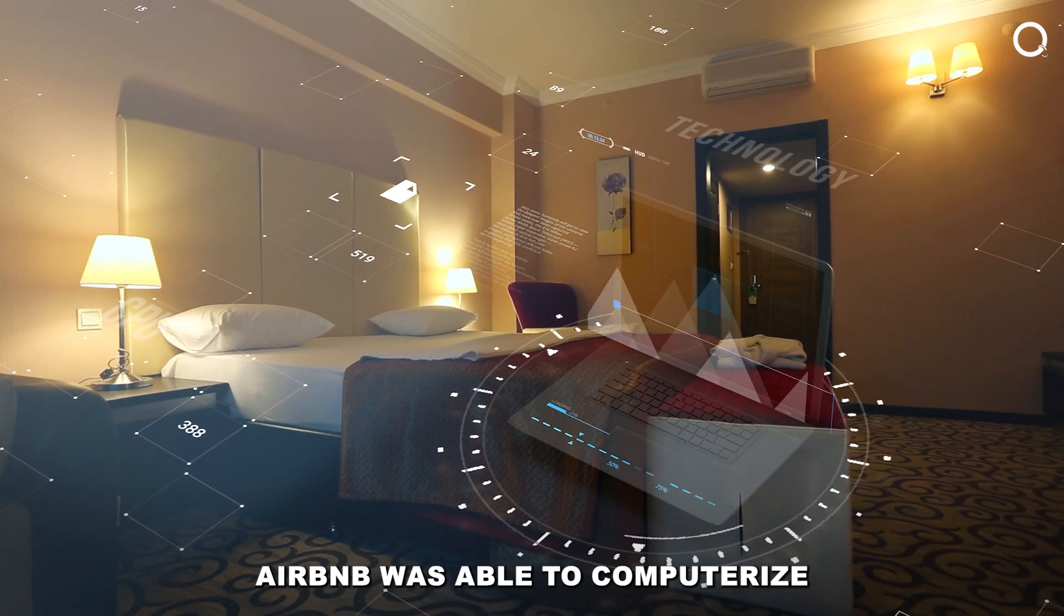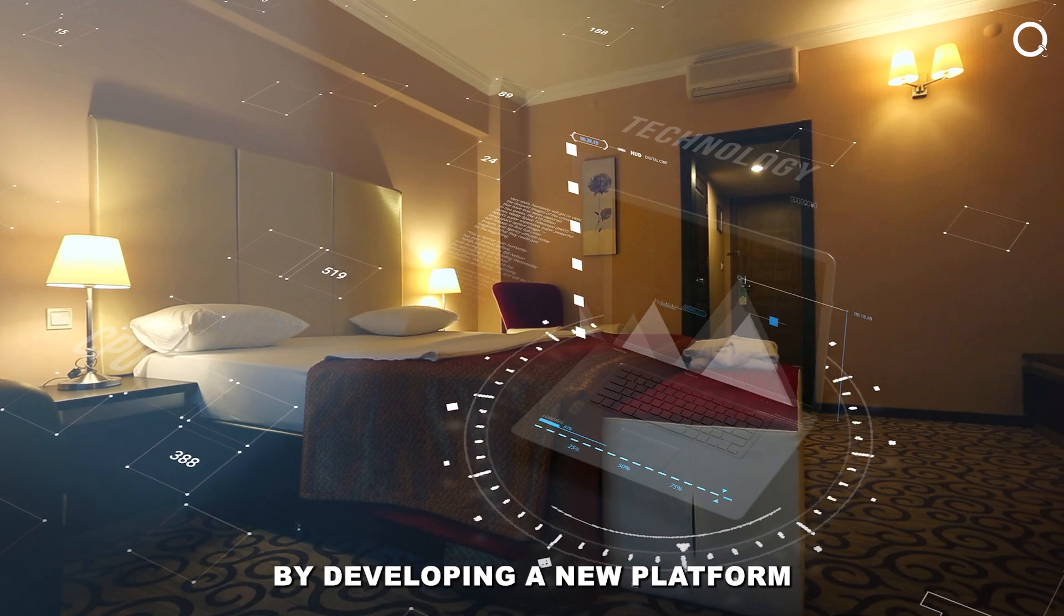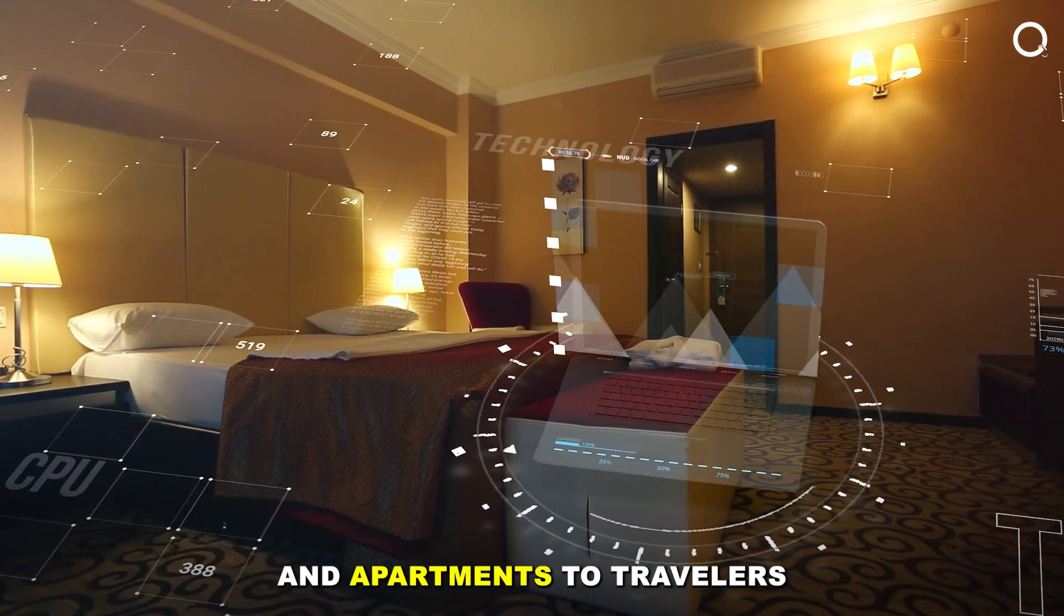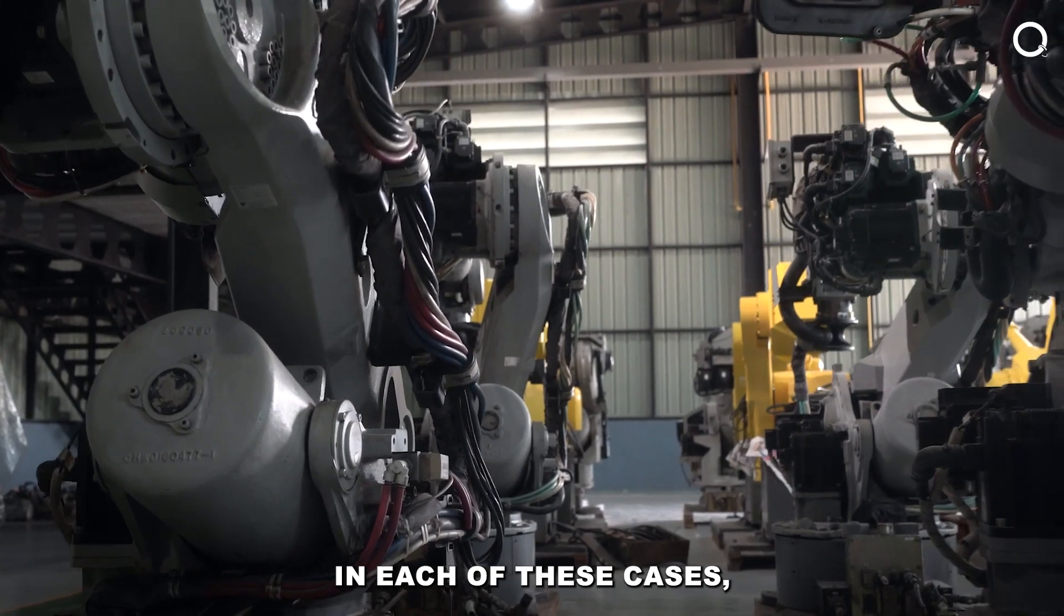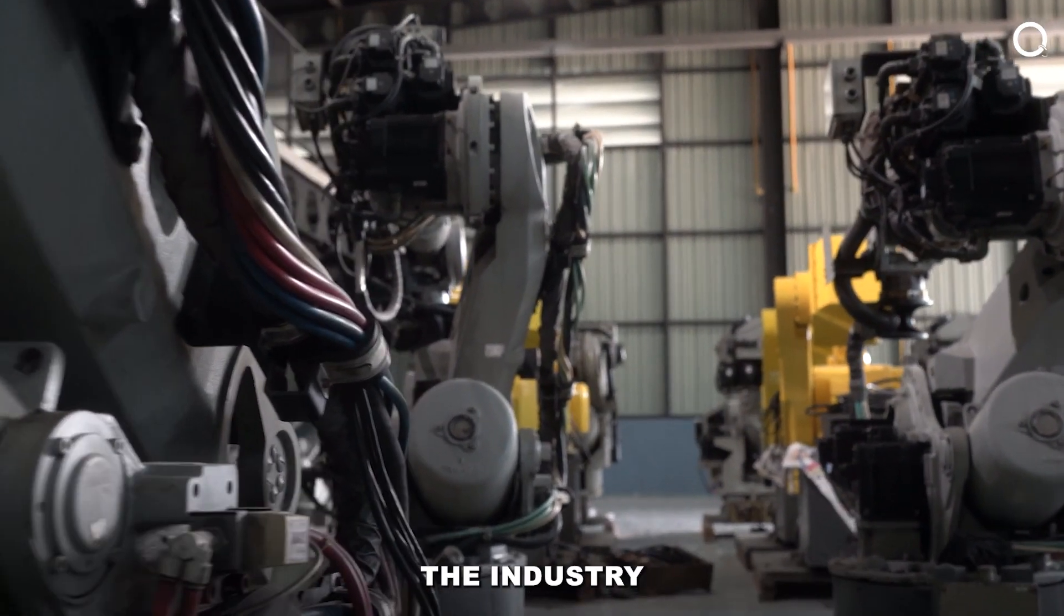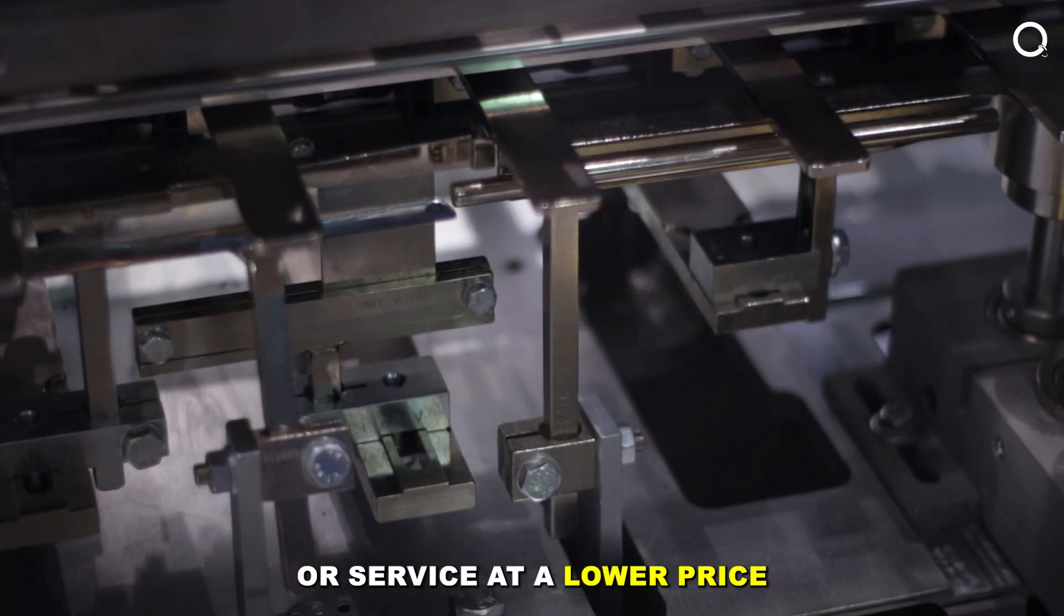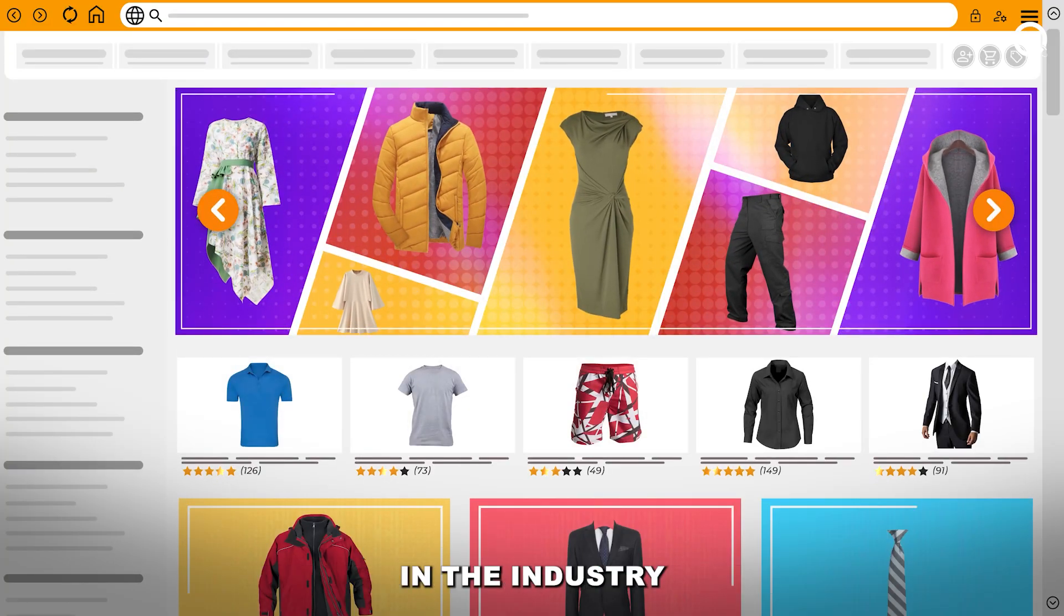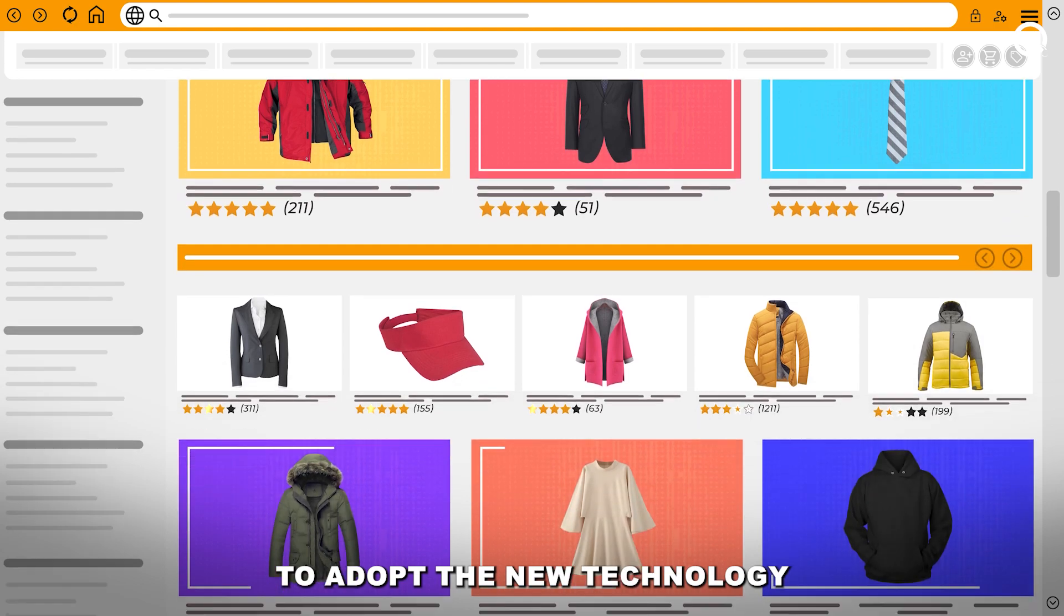Airbnb was able to computerize the short-term lodging industry by developing a new platform that allowed people to rent out their homes and apartments to travelers. In each of these cases, the company was able to computerize the industry by offering a better product or service at a lower price. This forced existing companies in the industry to adopt the new technology in order to compete.